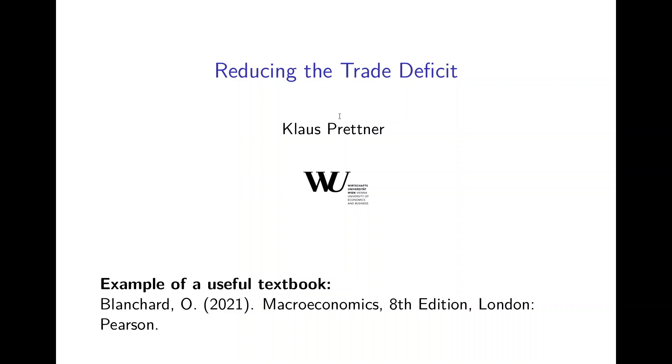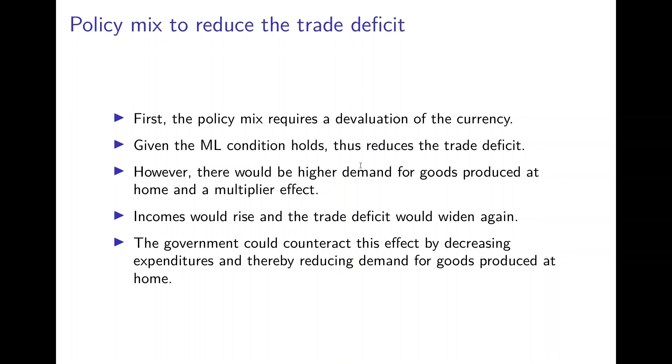This chapter deals with the situation where a government wants to reduce the trade deficit and asks which policy combinations could achieve this goal. This makes clear that in an open economy, a country has different policies at its disposal with which it can achieve certain goals.